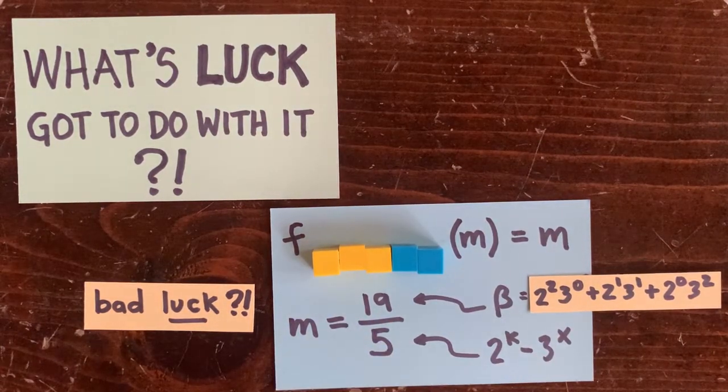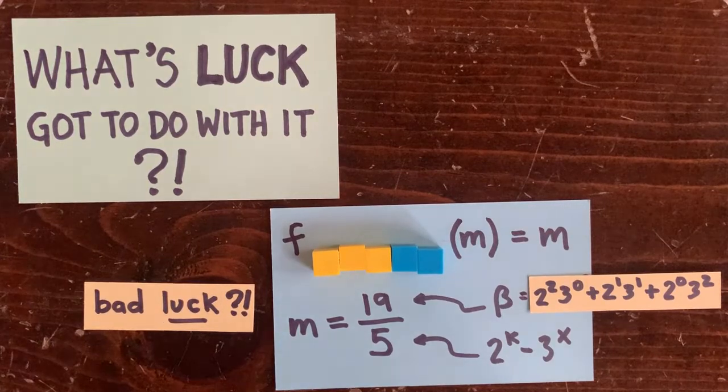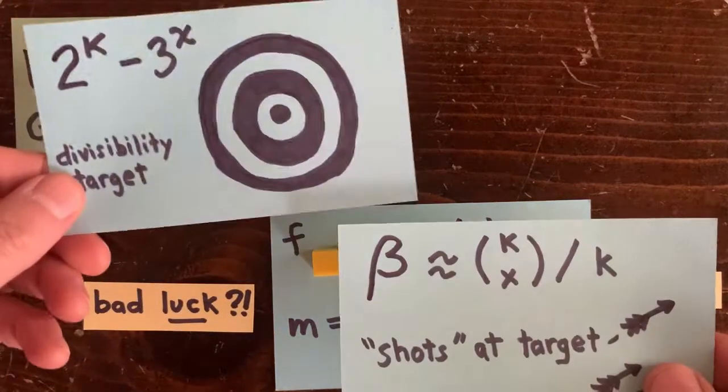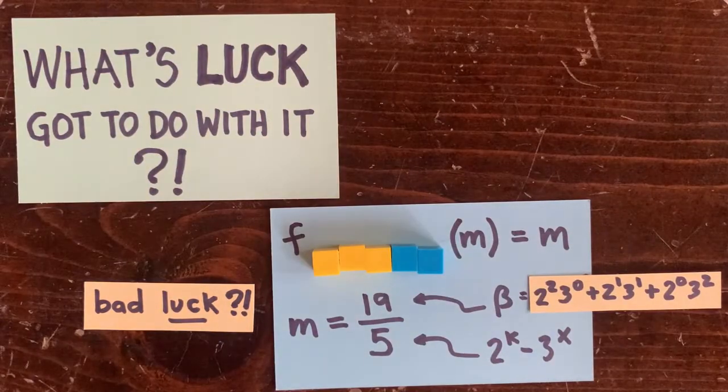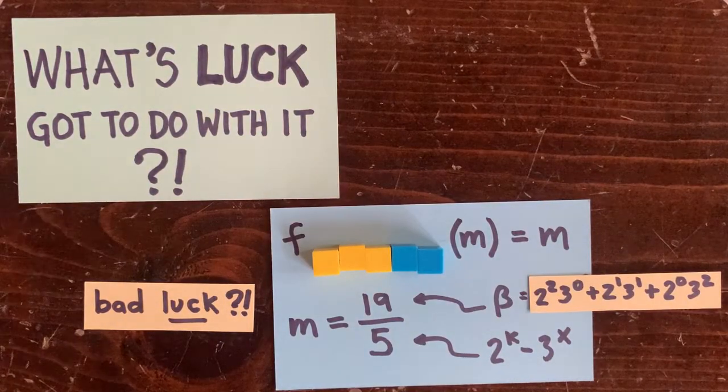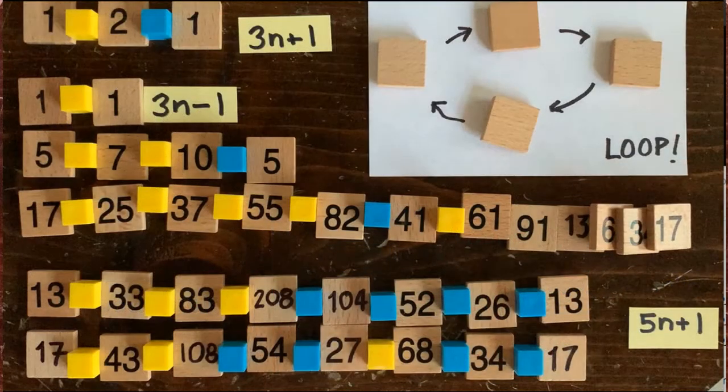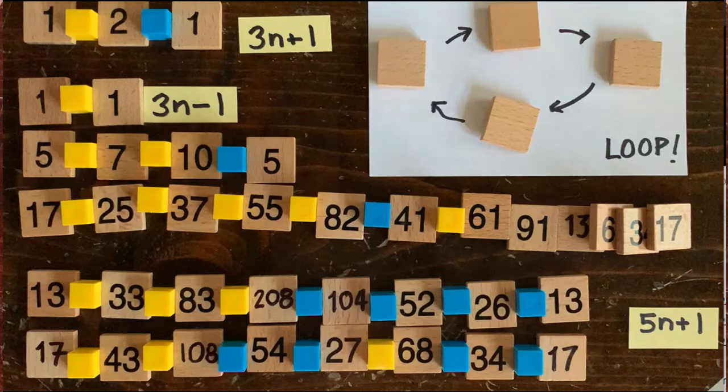So maybe there's a subtle interaction between the divisibility target, 2 to the k minus 3 to the x, and the way betas are constructed. That might allow us to prove that there are no loops. Of course, for the 3n minus 1 problem and the 5n plus 1 problem, there are some loops and betas do hit their targets. So maybe they're lucky.